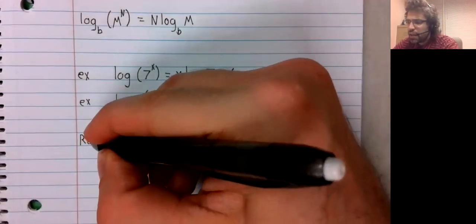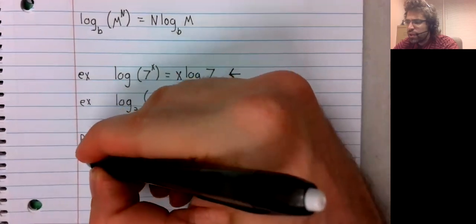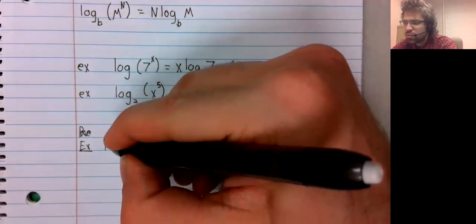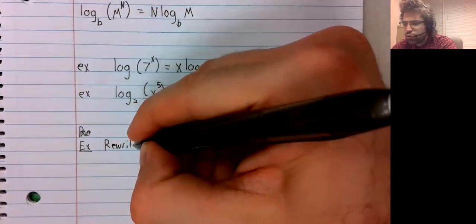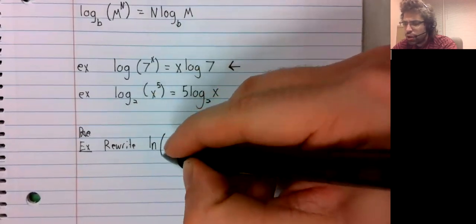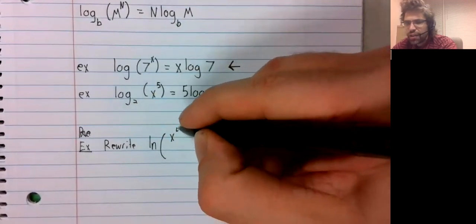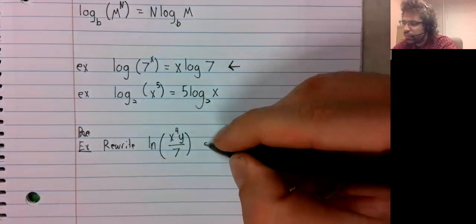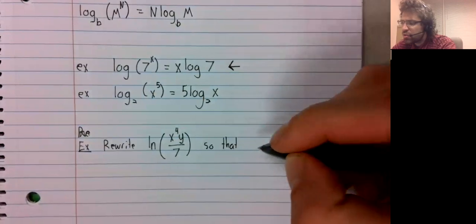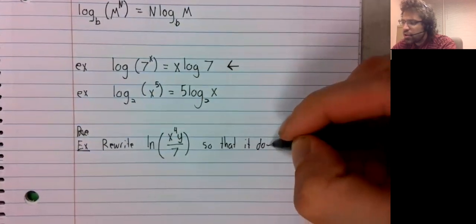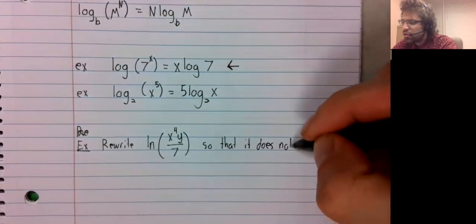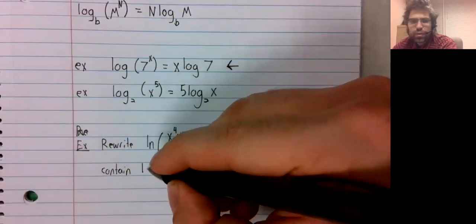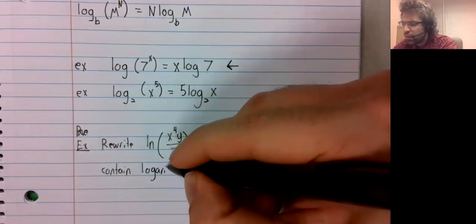Let's combine this set of notes with the last set of notes and rewrite the natural logarithm of x to the fourth of y divided by seven, so that it does not contain the logarithm of x.